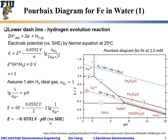The potential is referenced to the standard hydrogen electrode, and this tells us the exact position of the lower dashed blue line, which represents the hydrogen evolution reaction from proton. The proton activity of 1 corresponds to this reference condition.